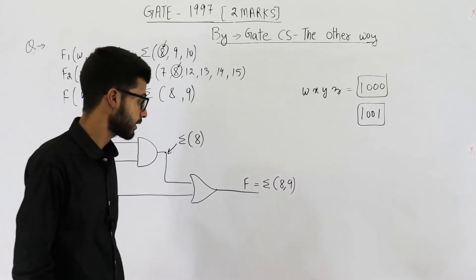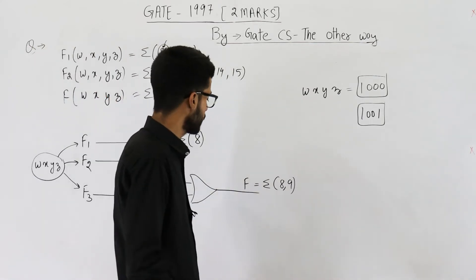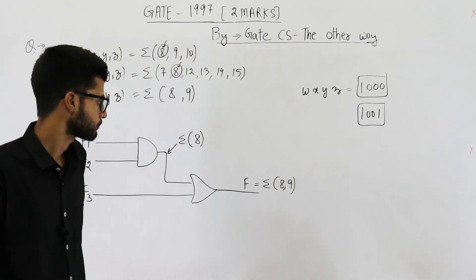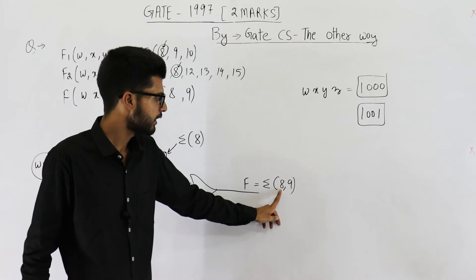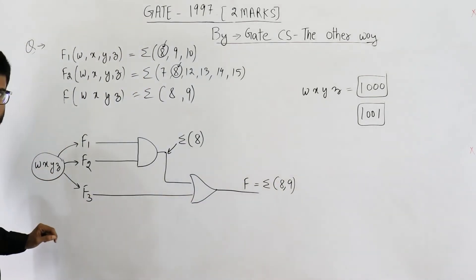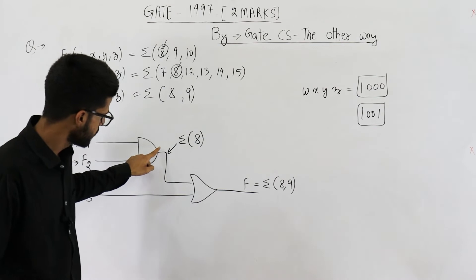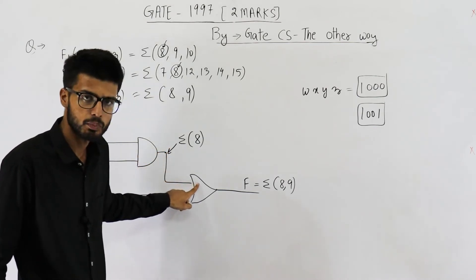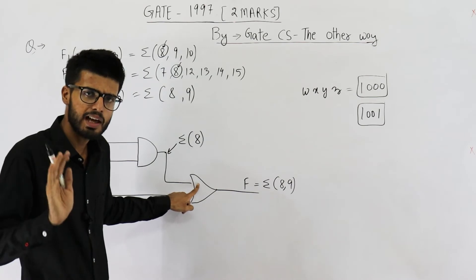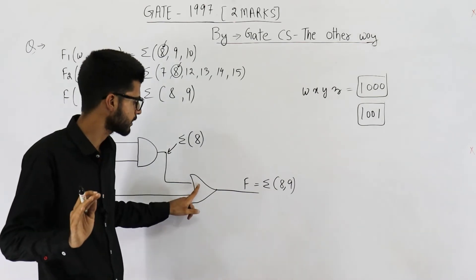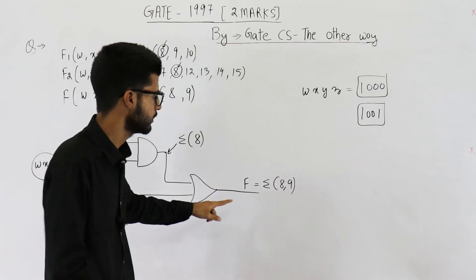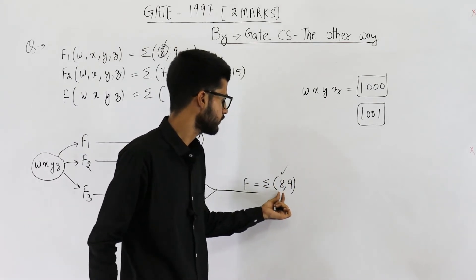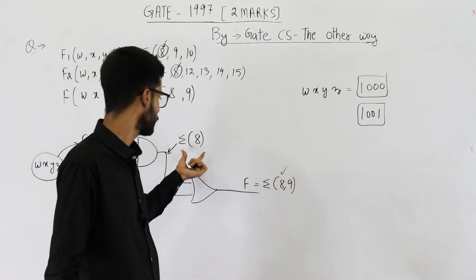An OR gate gives value 1 when either of its inputs is 1. In case of input 8, when the values of W, X, Y, Z correspond to 8, you'll be getting a 1 from the AND gate which is given to the OR gate's input. So when any one input of the OR gate is 1, you'll get a 1 output. That means on input 8, you will surely get high, so minterm 8 is one of the output minterms.